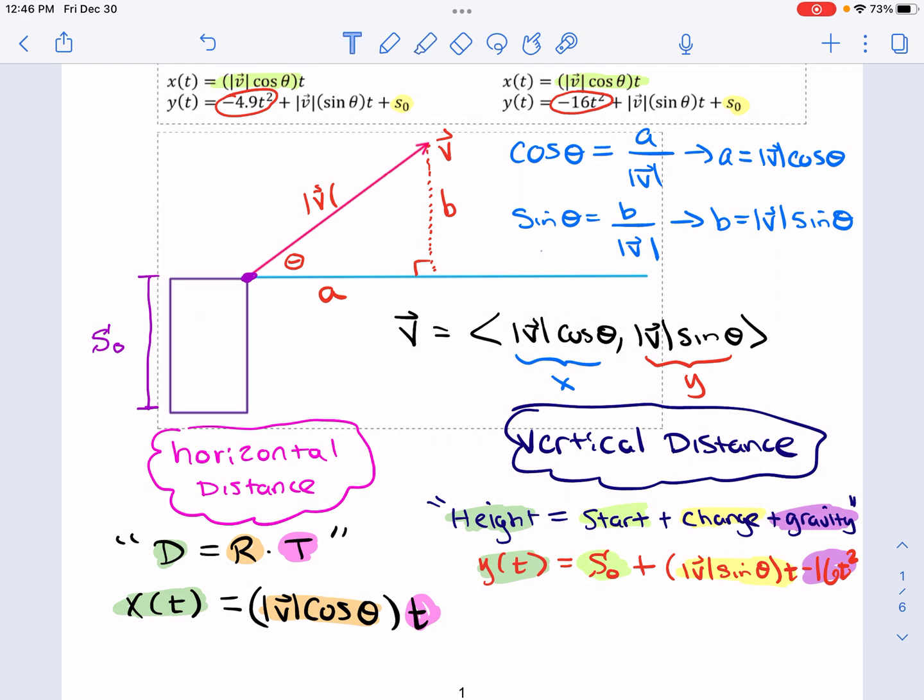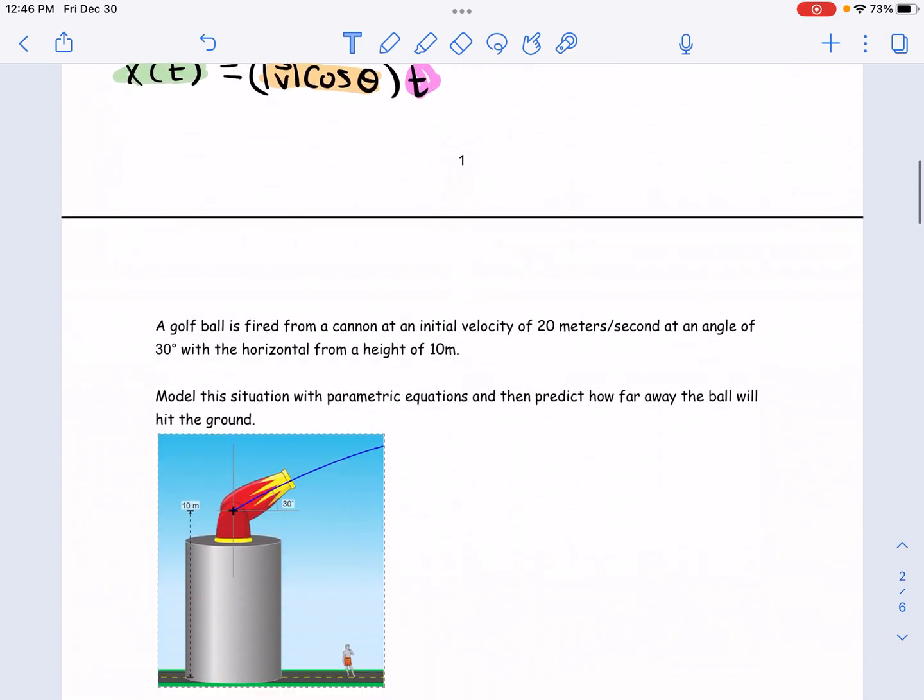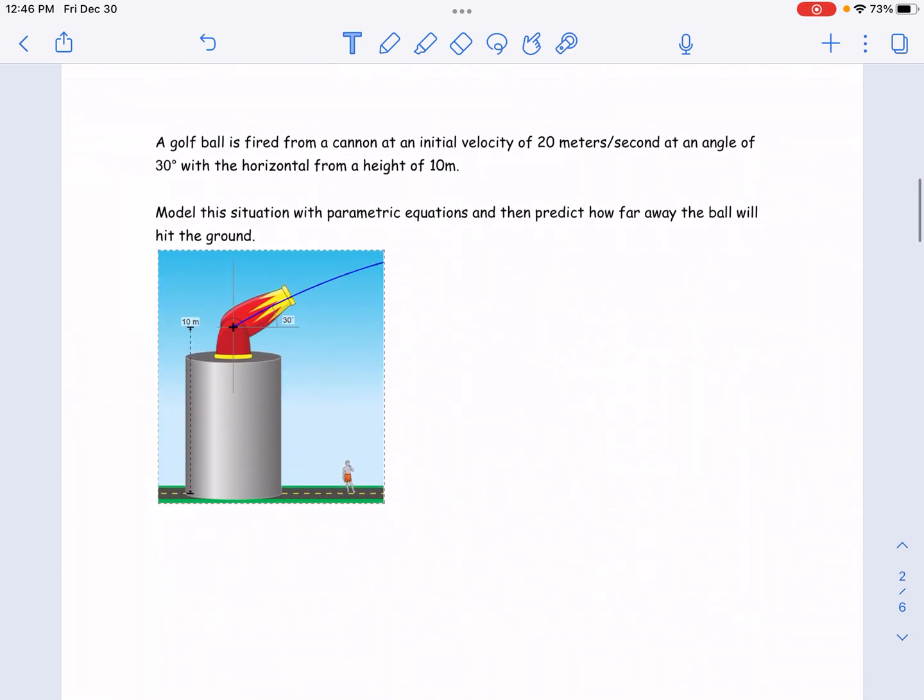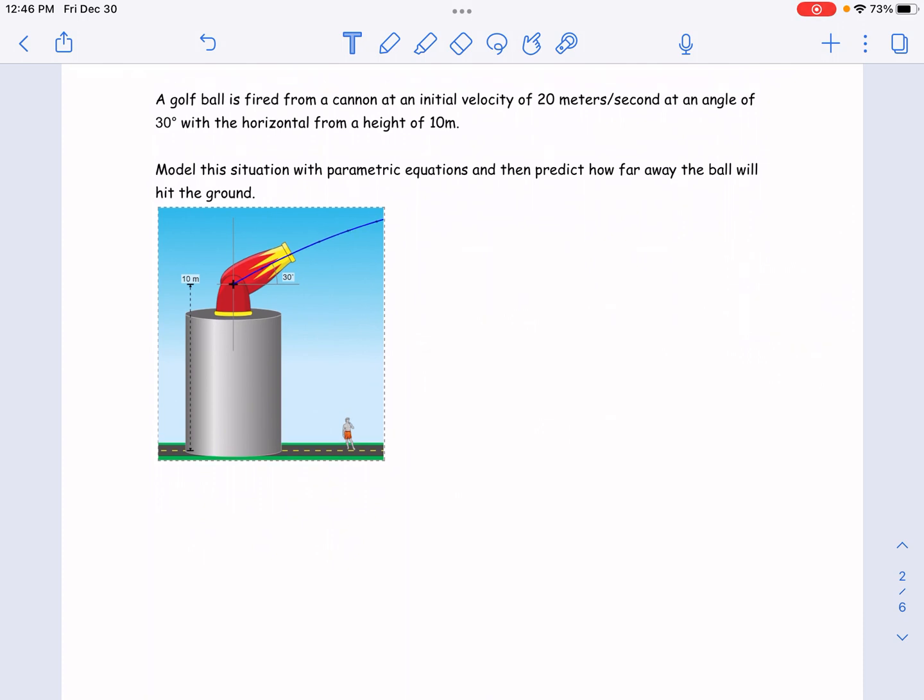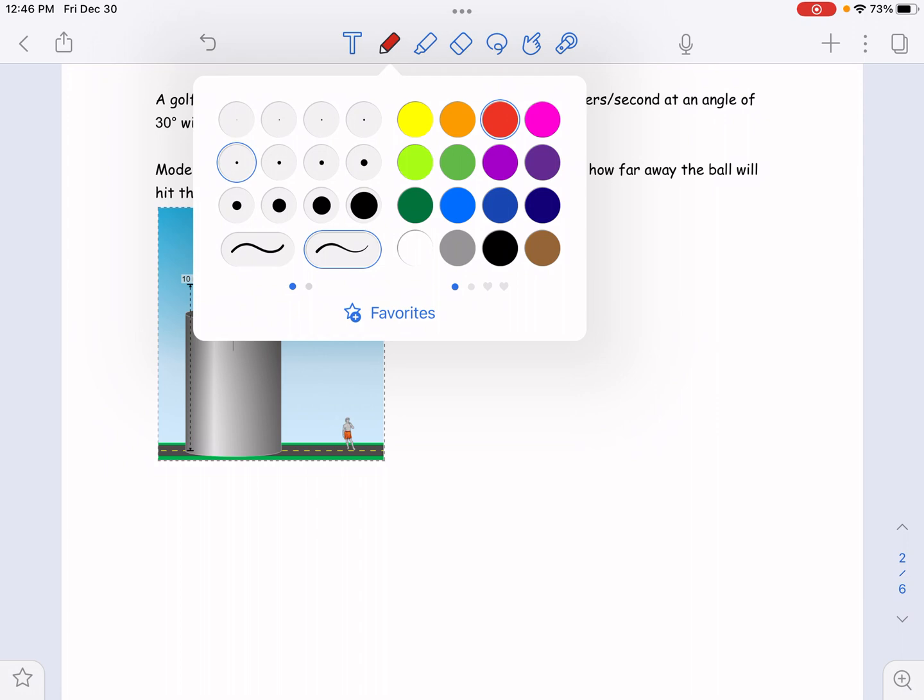More importantly, we're going to need to use them. And there's a lot of technology involved, at least the way I teach it. So in this example, we're just going to deal with the mechanics of the calculator, how we use them to solve these projectile motion problems. All right, so this says, a golf ball is fired from a cannon at an initial velocity of 20 meters per second at an angle of 30 degrees with the horizontal from a height of 10 meters. Model the situation with parametric equations and then predict how far away the ball will hit the ground.